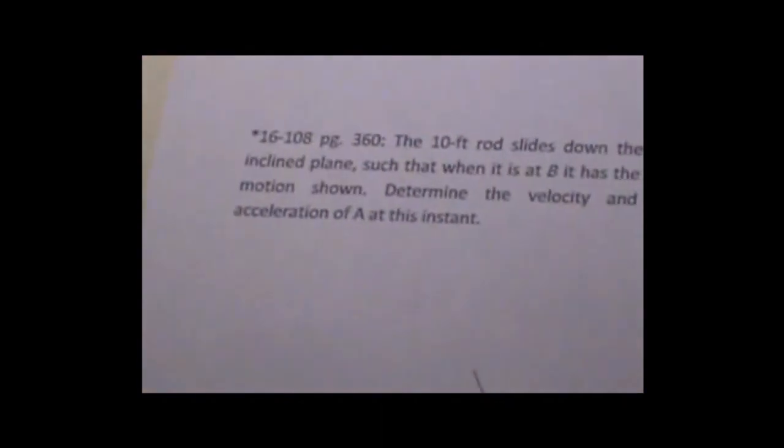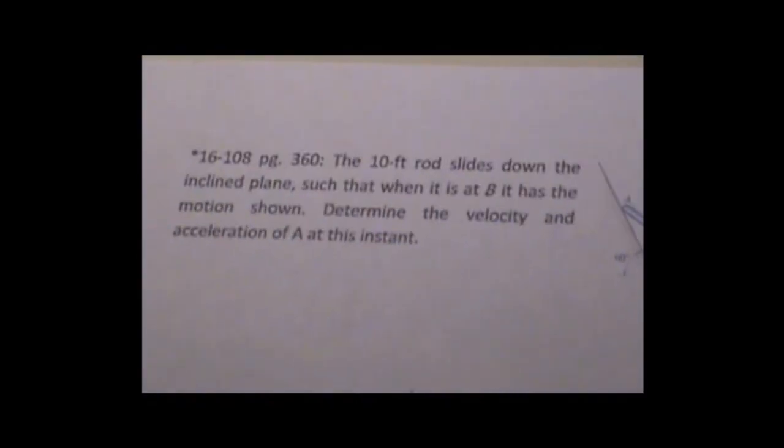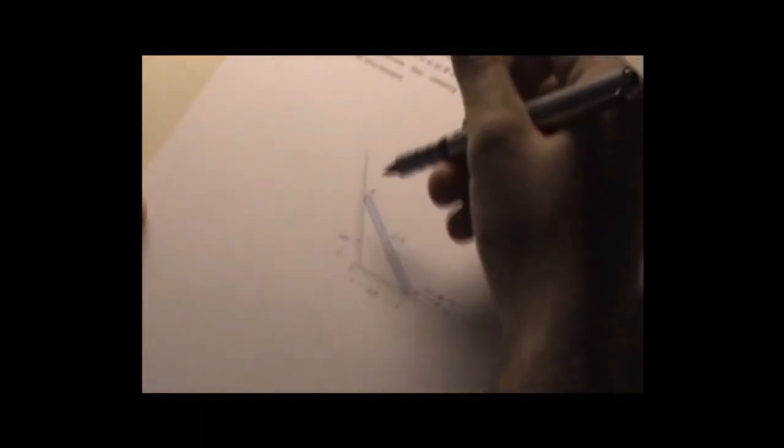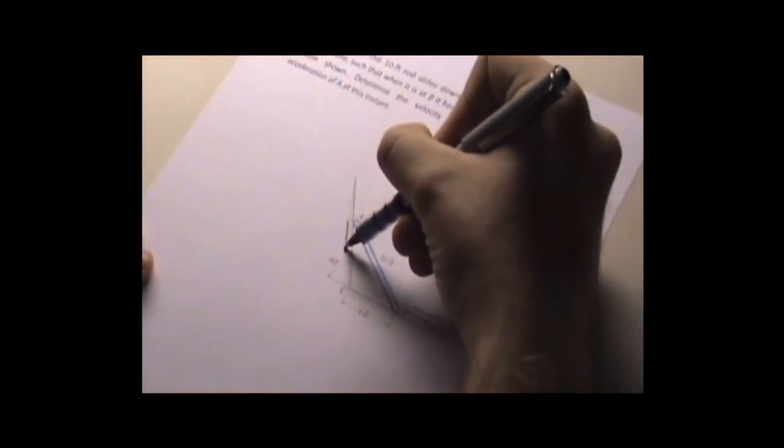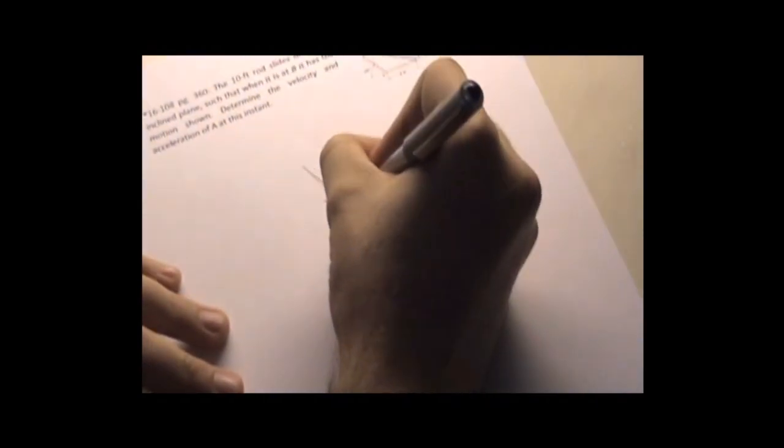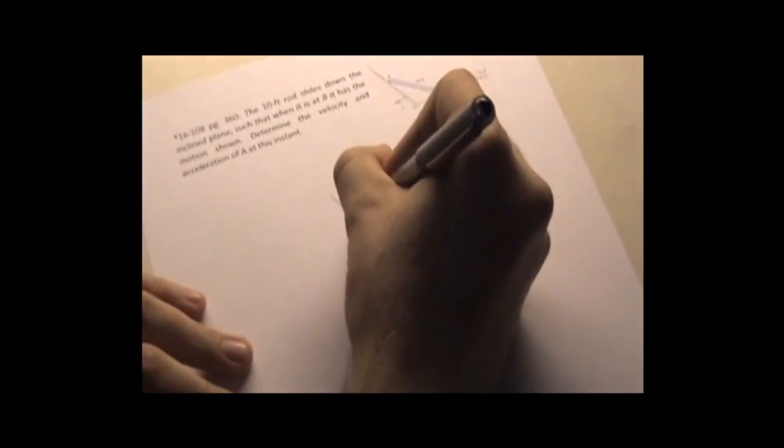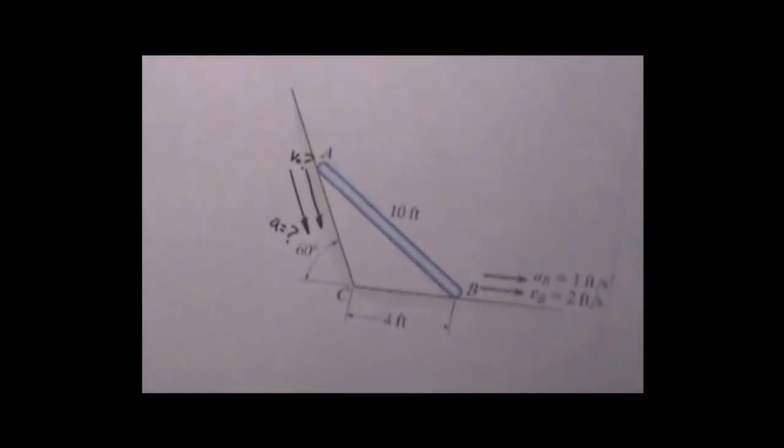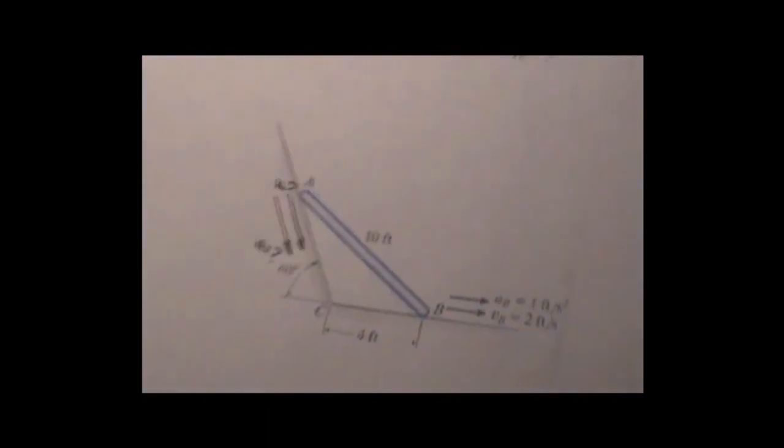Determine the velocity and acceleration of A at this instant. So it gives us the acceleration and velocity at B. We want to know the acceleration and velocity at A. One way we can do this, just to find the velocity, is using the method of IC.